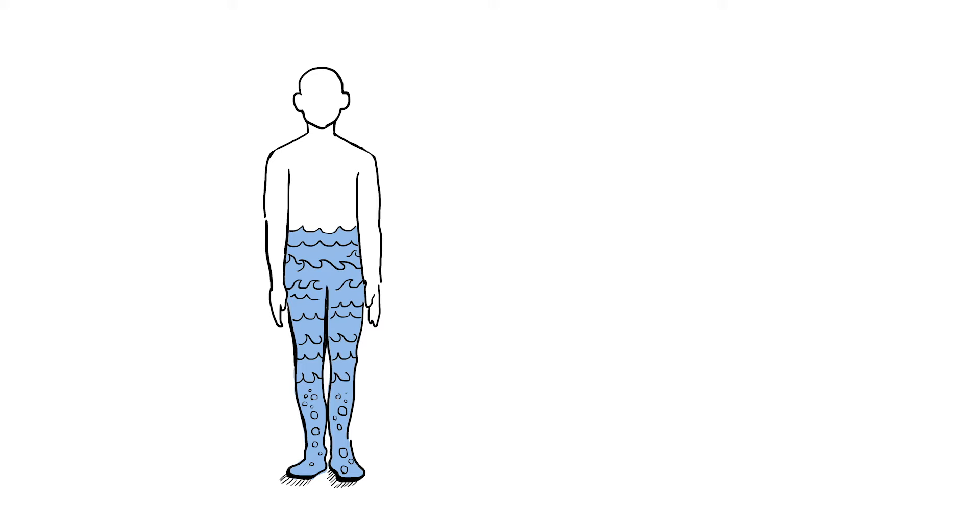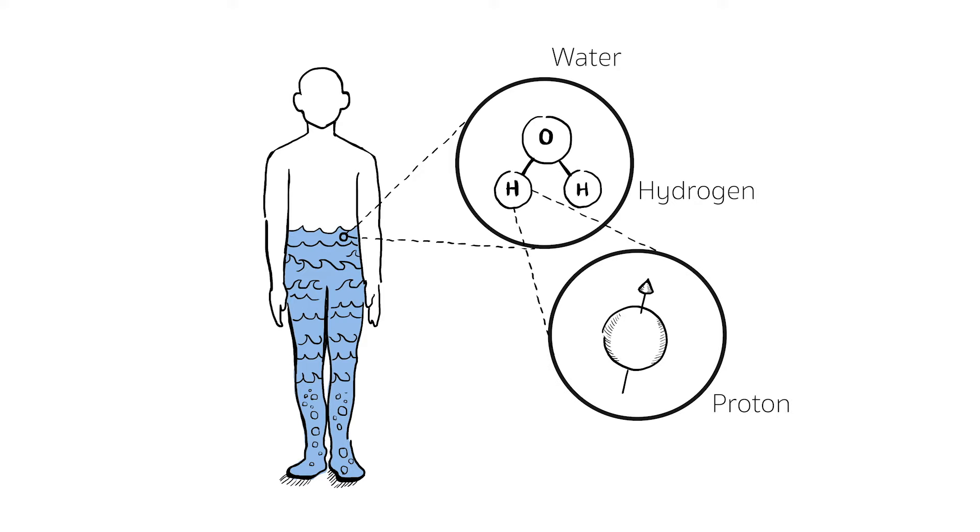The human body is made of more than 50% water. Each water molecule in the body contains two hydrogen atoms. These hydrogen atoms contain something called a proton.